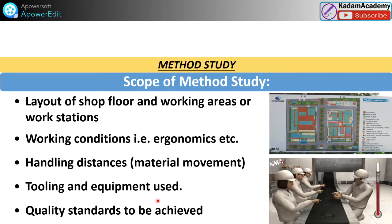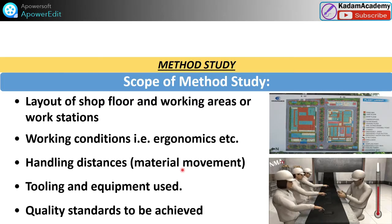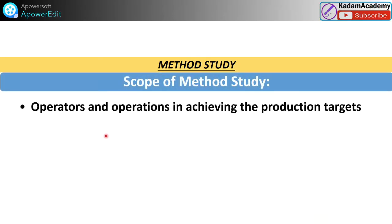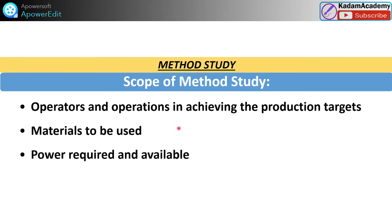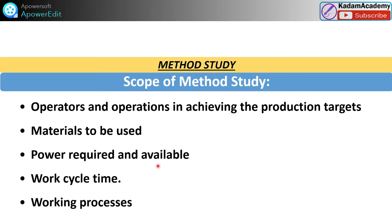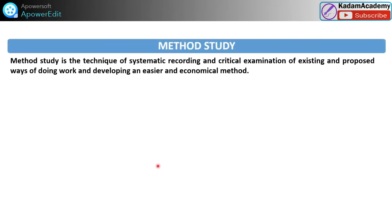That is also your purpose or scope to work on method study. Tooling and equipment use — you can also develop toolings and equipment so that the work is not fatiguing to the worker. Quality standards to be achieved for the product are also defined. The operators and operations in achieving production targets must be met. Material to be used — that must be saved, elimination of waste of material and power. Also, cost and work cycle time, standard time — where to reduce that by using method study and work measurement — and the working process.